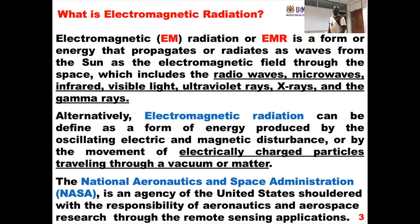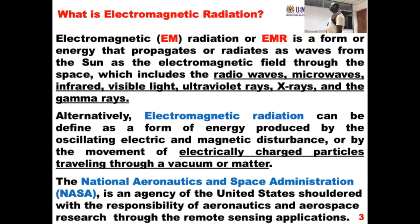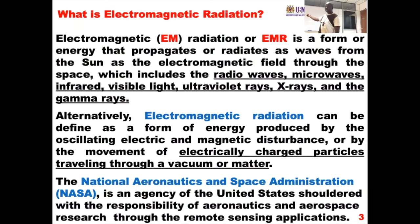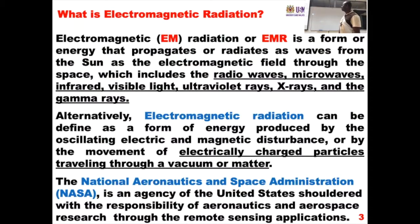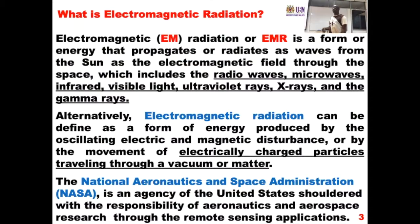Our main purpose is the visible light, which we have discussed. Electromagnetic radiation is a form of energy which the sun releases 24-7. It is the movement of electrically charged particles traveling from the sun through the vacuum of space.